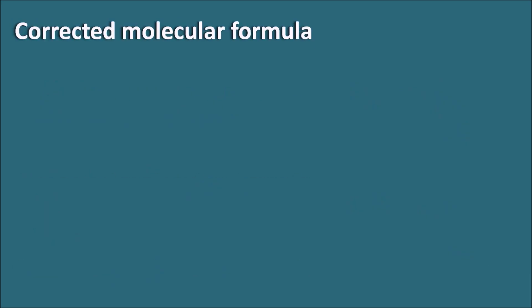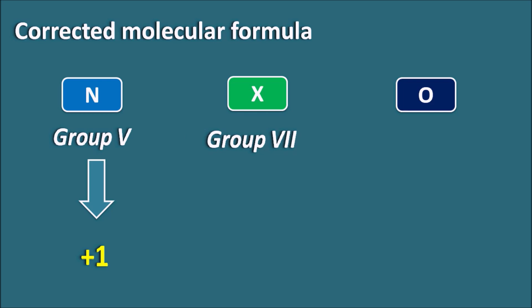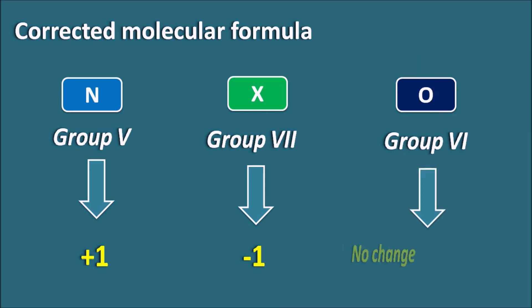Let us see the corrected molecular formula for a saturated compound having heteroatoms. If the molecule has heteroatoms like nitrogen, halogens, and oxygen, what will be the correction? Nitrogen is present in group 5 of the periodic table. So elements in group 5 like nitrogen and phosphorus — if they are present in the compound, we have to increase the number of hydrogens by plus 1. Similarly, halogens which belong to group 7 — if they are present, we have to decrease the number of hydrogens by minus 1. Finally, if the molecule has oxygen or sulfur from group 6, we should not change any number of hydrogens.